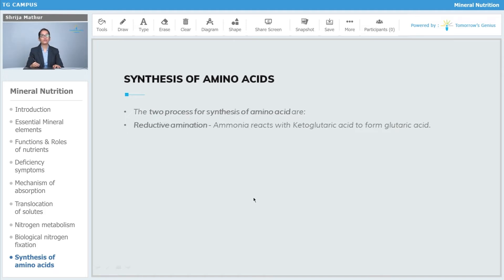What are the two processes for this synthesis? First is reductive amination. Ammonia reacts with alpha-ketoglutaric acid to form glutamic acid.